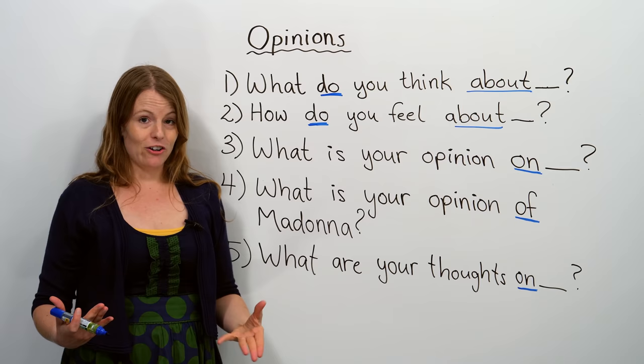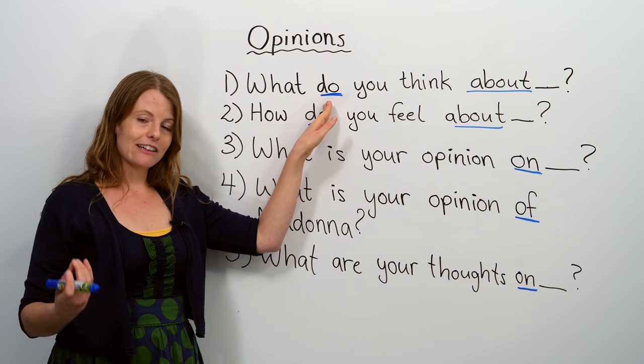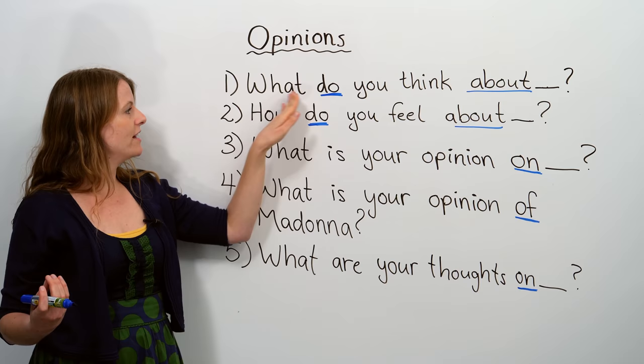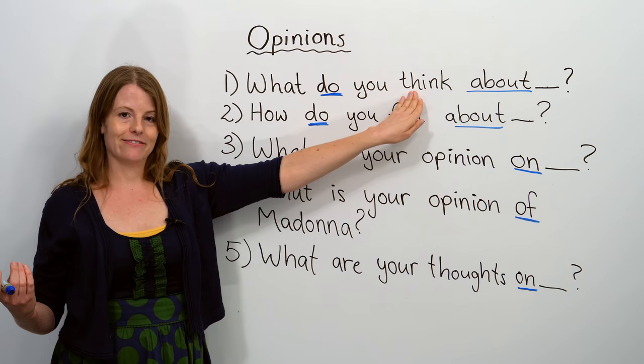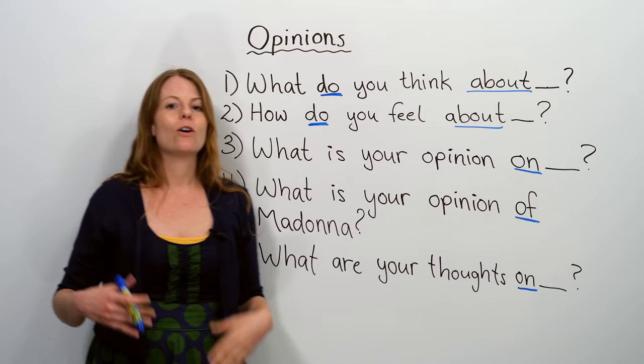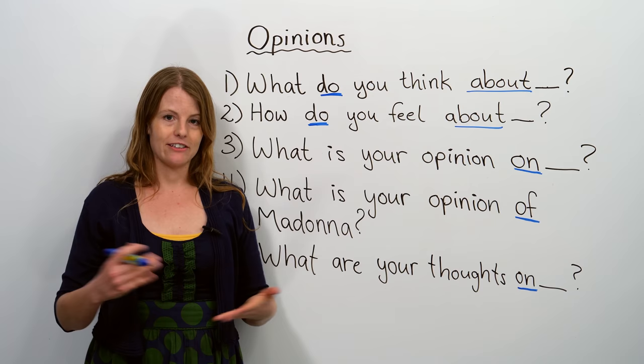What I want you to really focus on is some of the words I've underlined. Many English language learners forget this word: do. We say, what do you think about? Notice I also underlined the word about. This goes with the word think, so you need to remember this preposition. What do you think about blank? That just means what's your opinion on this topic.